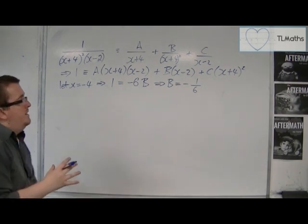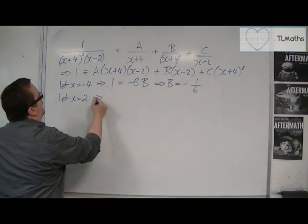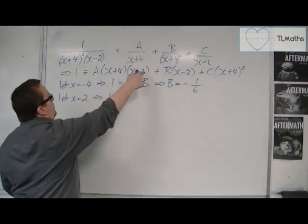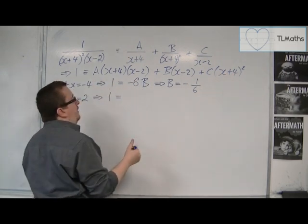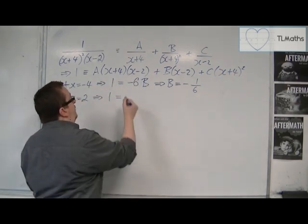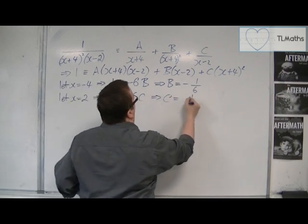So then I could choose let x be equal to 2. And so I'd have 1 is equal to, it's going to get rid of that bracket and that one. And I'm going to be left with 2 plus 4 is 6. So 6 squared is 36, so 36c. So c must be 1 over 36.